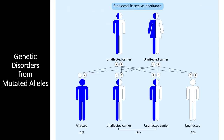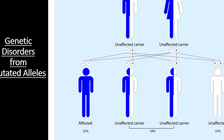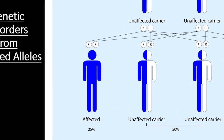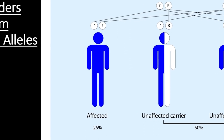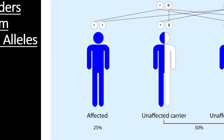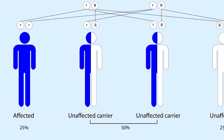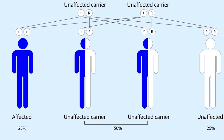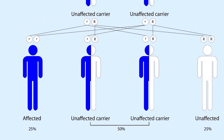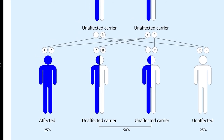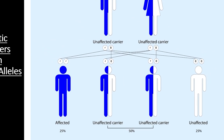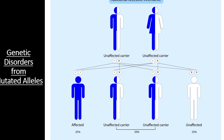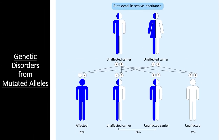Let's consider an autosomal recessive disorder. Just like an autosomal recessive trait, the only offspring that actually show the symptoms of an autosomal recessive disorder are those that receive two mutated, disease-causing alleles. Offspring that only receive one mutated allele are known as carriers — they can pass the disorder on to the next generation but do not show symptoms themselves. In a cross between two carrier parents, 25% of children will be affected, 50% will be carriers, and only 25% will be completely free of disease-causing alleles.